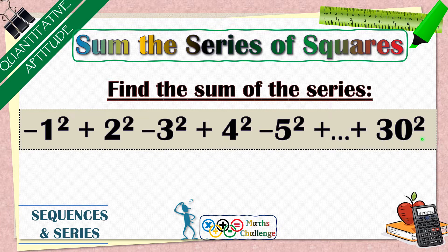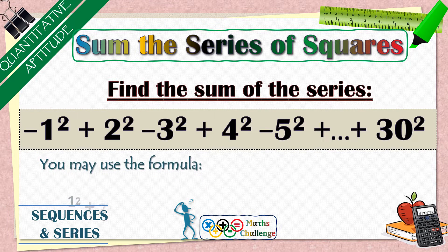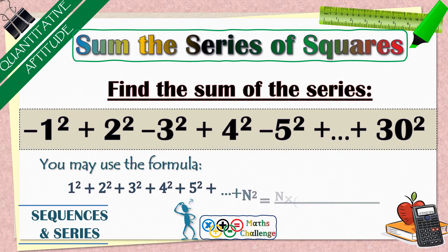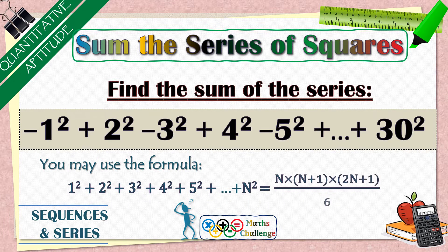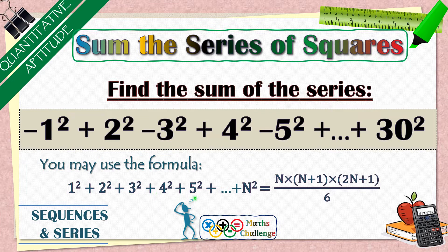For this task you may use a formula for the sum of squares of first n natural numbers, which is 1 square plus 2 square plus 3 square plus up to n square equals n into n plus 1 into 2n plus 1 divided by 6.